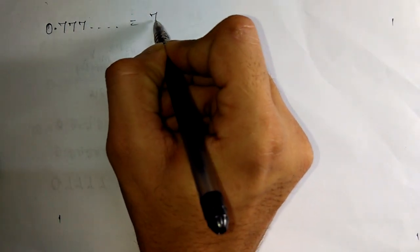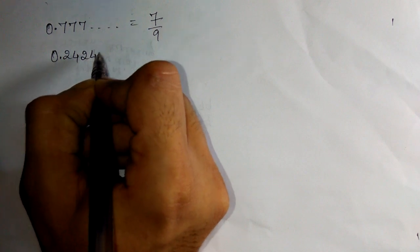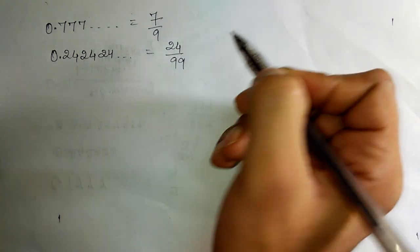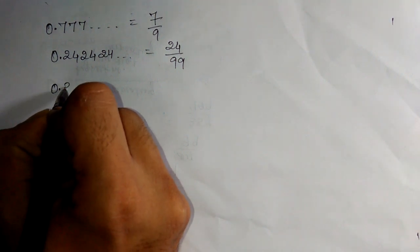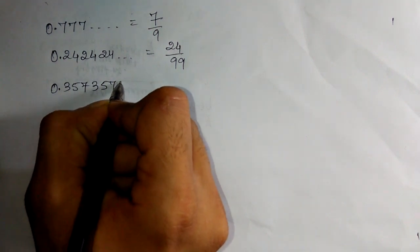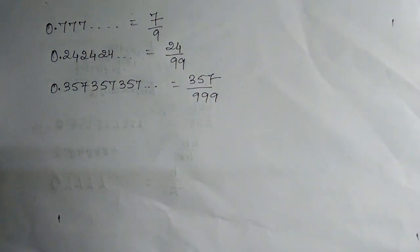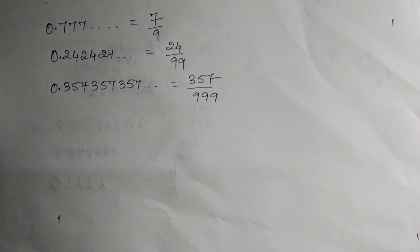Its answer is 7 by 9. I will tell you how the answer came later on. Let us take another example: 0.242424 and so on — its fraction is 24 by 99. And another example: 0.357357357 and so on — the fraction is 357 by 999. It's pretty easy to find the fraction, so let's see how it's coming.